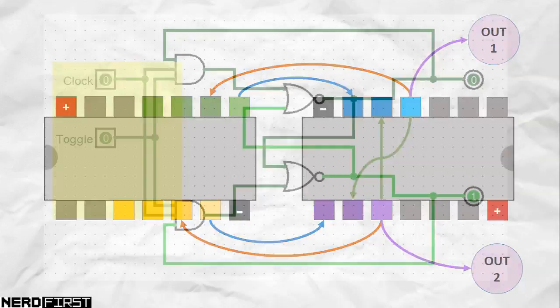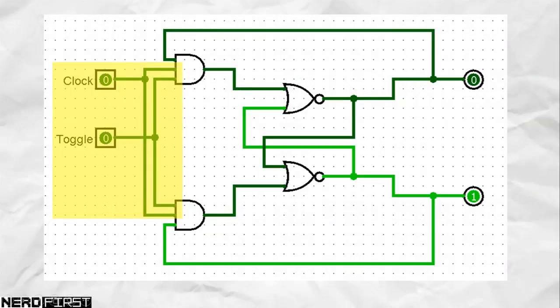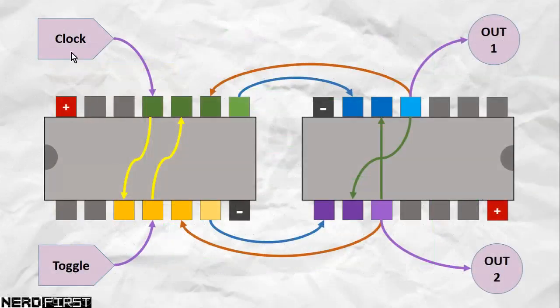Next, all we're left with are our two inputs, namely the clock and toggle inputs, which of course feed our AND gates. Since these are shared, it's fairly easy to do. We have our clock pulse coming in here to one AND gate,